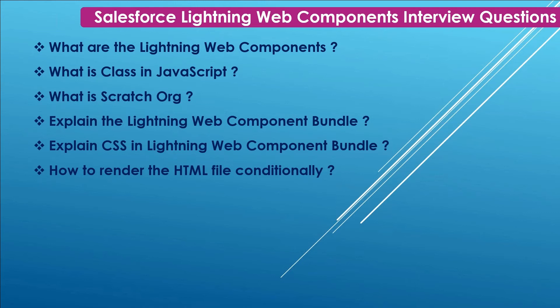Next: How to render an HTML file conditionally? To render HTML conditionally, we use a nested template tag. The directive has two properties: if:true and if:false. Use 'if:true={propertyName}' in curly brackets to render when true, and 'if:false={propertyName}' to render when false.